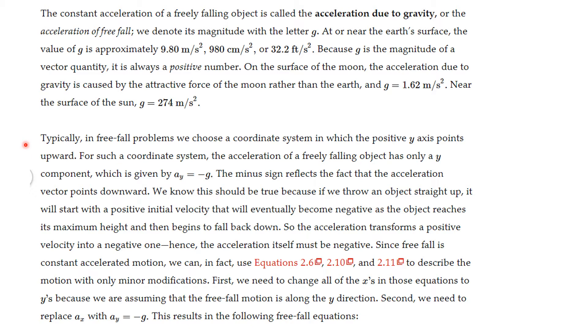So typically, in free fall problems, we choose a coordinate system in which the positive y axis points upward. And that means that the acceleration due to y is going to be minus g, the minus sign reflected that the vector is pointing downward. We know this is true because if we throw an object up, it will eventually start coming down. So the same equations will all work if we change all of the x's to y's, and we take into account that a sub y is minus g.